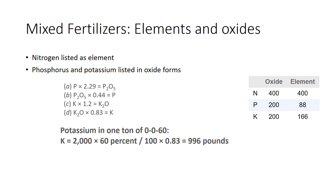One way fertilizer grade is listed leads to some confusion. Some people think of fertilizer grade as NPK. Actually, nitrogen is listed as the element, but the other two nutrients are listed in their oxide forms. The true grade should be listed as N-P₂O₅-K₂O, which is read as nitrogen, phosphoric acid, and potash. As an example of the confusion, consider the fertilizer 20-10-10. The numbers lead one to expect 200 lbs of phosphorus in a ton of this fertilizer, but actually one ton contains only 88 lbs of phosphorus.